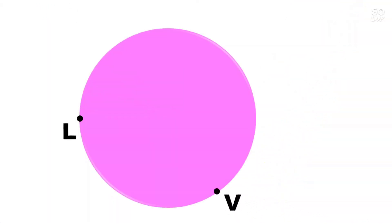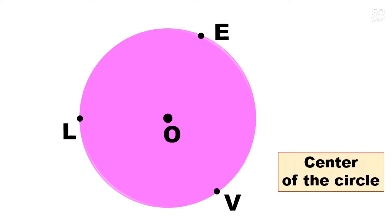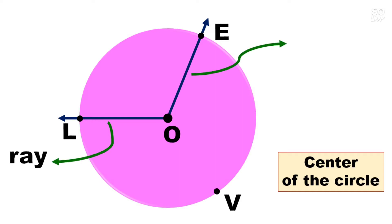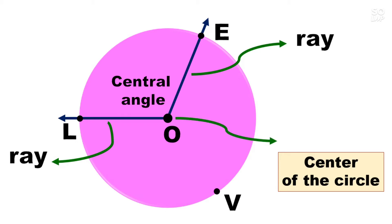We have a circle with points L, B, and E on the circle, and point O which is the center of the circle. We have two rays — Ray 1 and Ray 2 — and the angle they form is what we call the central angle. A central angle of a circle is an angle formed by two rays whose vertex is the center of the circle.